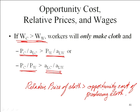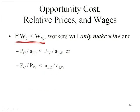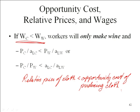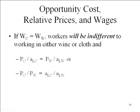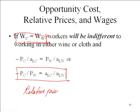What happens if the wage in the cloth industry is less than the wage in the wine industry? Of course, it's just the opposite: the relative price of cloth is less than the opportunity cost of producing cloth, so you only want to make wine. Notice that in the first two situations, the country is only going to produce one of the two goods, which doesn't sound like an equilibrium. So if wages in both industries are equalized, then the relative price equals the opportunity cost, workers will be indifferent between industries, and we'll be producing some of both goods. The actual quantity determined by consumer preferences. This gives us an equilibrium condition.